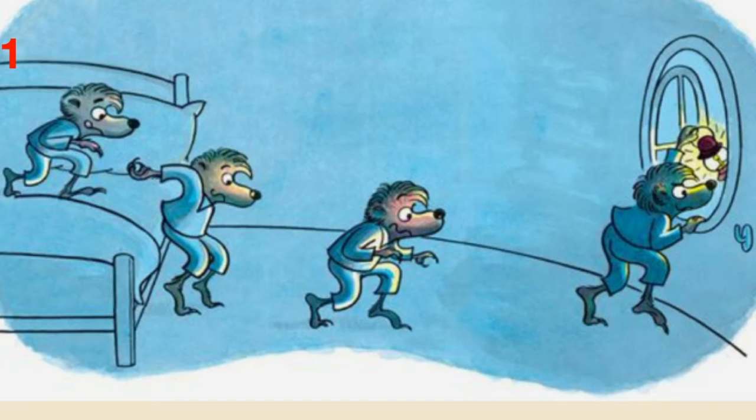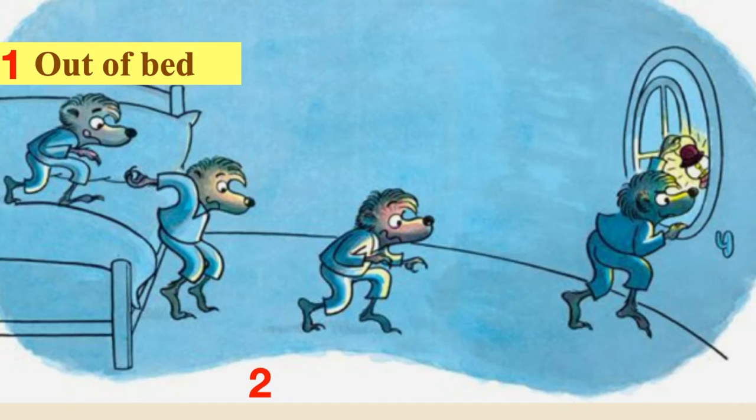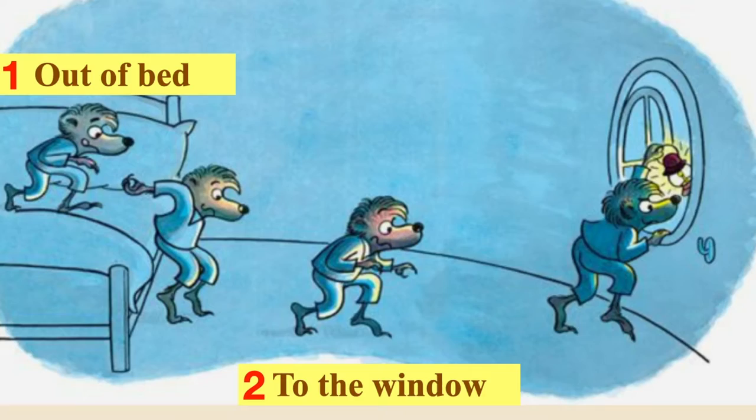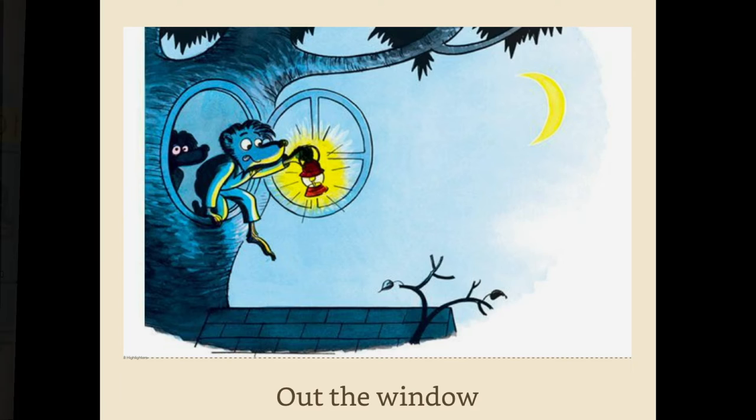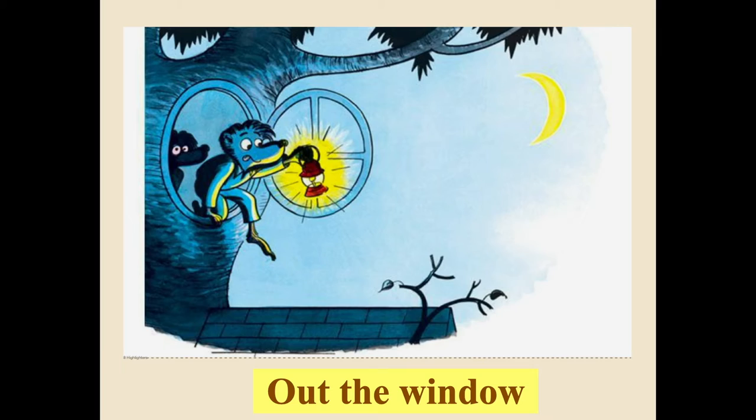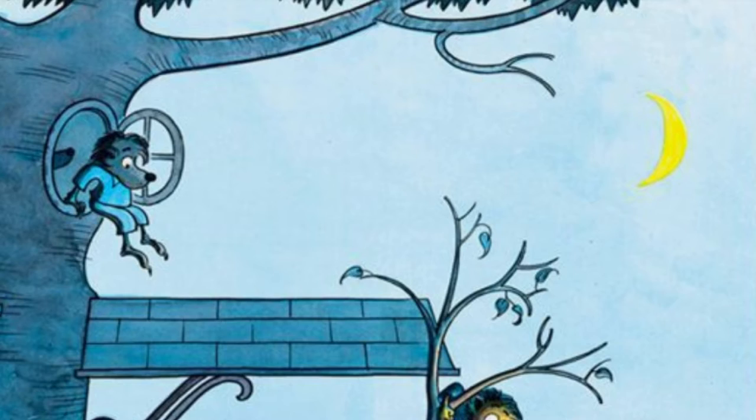And then they go — one is going to be Out of Bed. Two, what's two going to be? Two is To the Window. And then three — that guy at the front is At the Window. And now we are Out the Window.